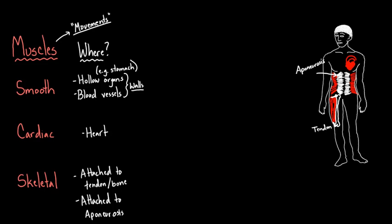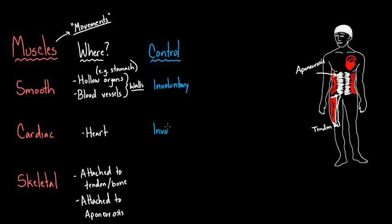Let's think about some other differences between these categories — specifically movement control. Who controls the movement? Do you control it, or is it done automatically? Smooth muscle is involuntary, meaning your body automatically takes care of it. The same is true for cardiac muscle — involuntary — meaning you don't have to think about your next heartbeat; it just happens automatically. Skeletal muscle is the opposite: it's voluntary. If you didn't want to get up or go running, you wouldn't — those movements are under your control.